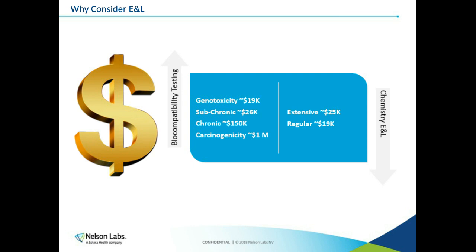When you have these options, you have the opportunity to save a lot of time and money if you consider chemistry instead of those other tests. For example, if you have a medical device that permanently contacts the body, there's a whole suite of tests required that includes genotoxicity, subacute and chronic toxicity, chronic toxicity, and carcinogenicity — displaying some ballpark prices on the slide. You can see that's quite a lot of burden in testing. Comparing that to extractables and leachables chemistry testing, the price is a lot less burdensome — a regular run is in the ballpark of $19,000. It can get a little more expensive, but it's still a lot less than running just one sub-chronic test.